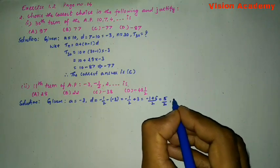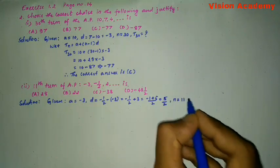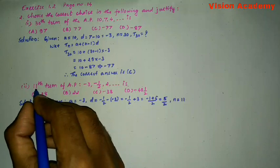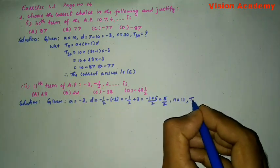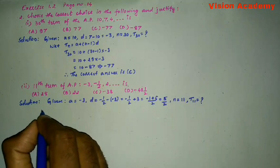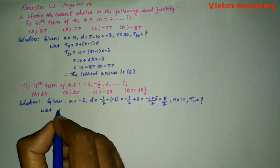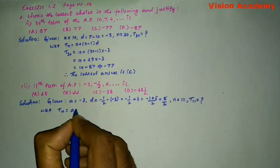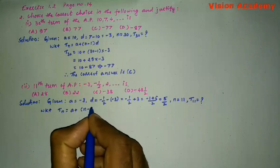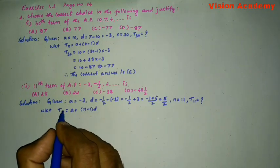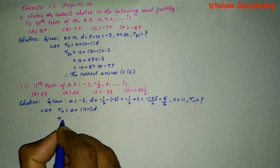N is equal to 11 because we need to find the 11th term. T11 is equal to what? We know that TN is equal to A plus N minus 1 into D. Here N is 11.